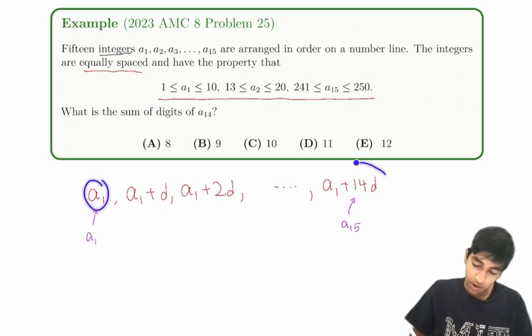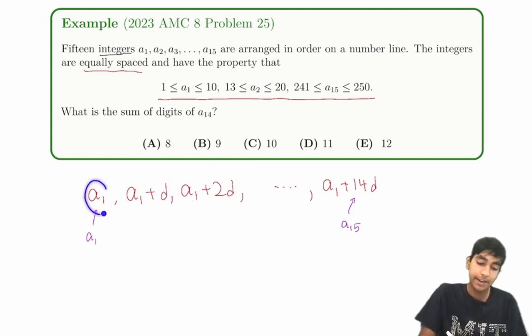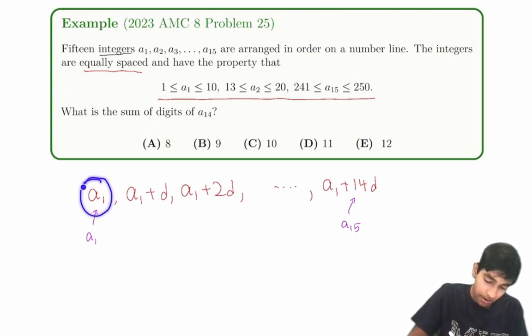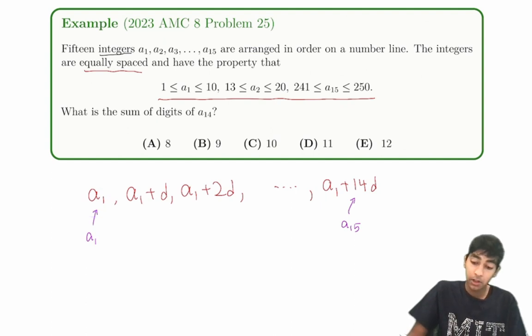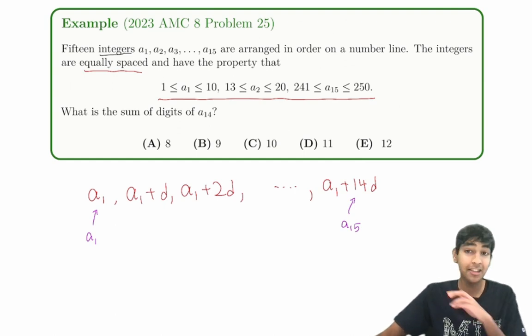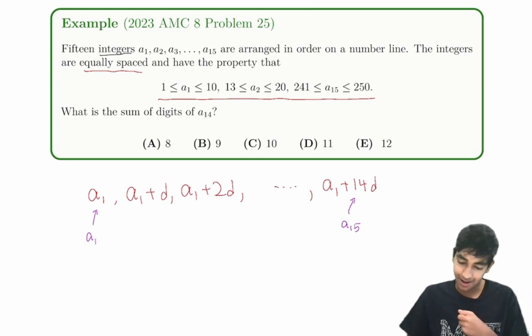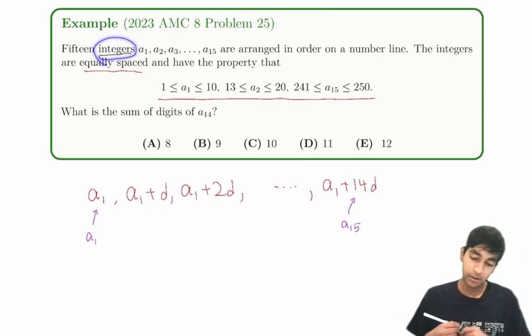So how should we use this integer condition? Notice that because all of these numbers are integers, a1 has to be an integer, of course, and so does d. d has to be an integer as well, so that this term is an integer. And that means that, essentially, this number plus a multiple of 14, 14d, will equal this number. And these are the kind of observations you have to make. This is not really a pure algebra problem. This is like an algebraic number theory type. So we have to look for multiples, divisors, these kind of conditions, because integers.